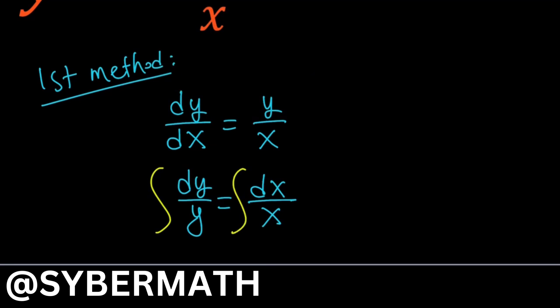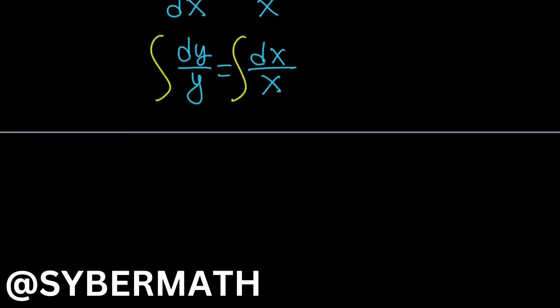When you integrate each side, you're going to get something with the natural log function. Now let's avoid some of these issues because at the end they're going to simplify anyways. So I just want to assume for simplicity's sake that y and x are positive.